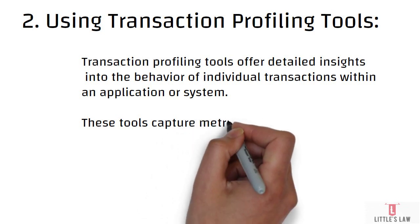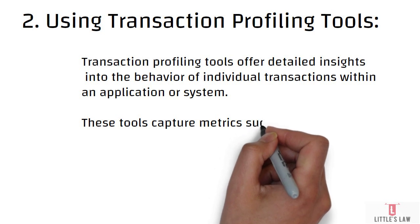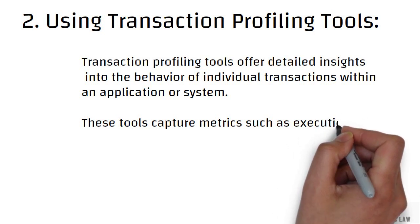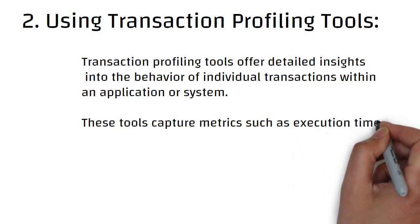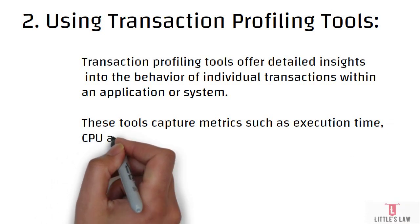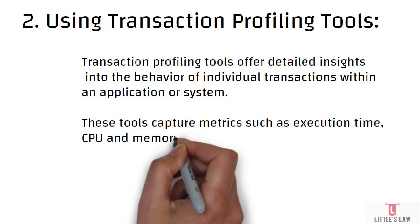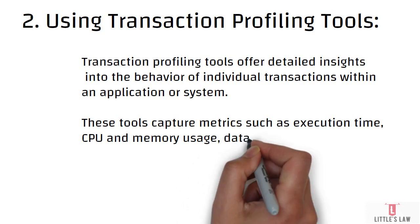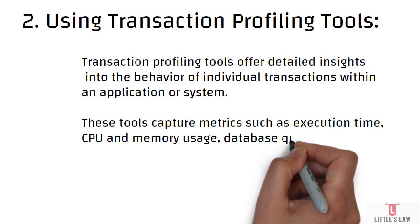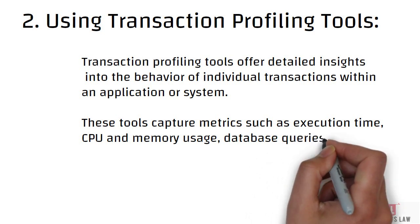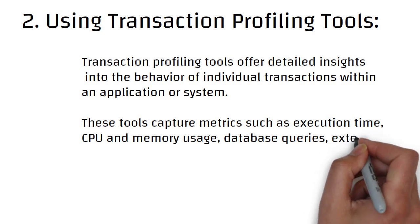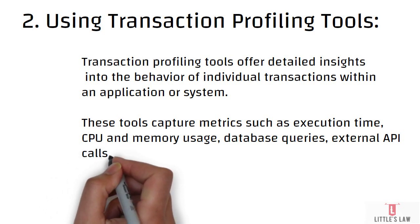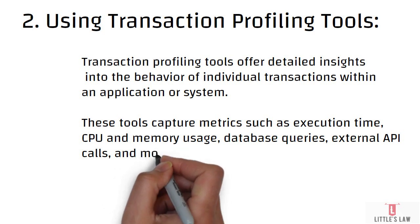Once we have those metrics, we use the New Relic dashboard to analyze the transaction data and identify transactions with high response times or performance issues. After this, we drill down into individual transactions to view detailed performance metrics, including breakdown by component, database queries, external calls, and CPU/memory usage. We also identify slow-performing transactions, outliers, and bottlenecks that may be impacting the overall application performance.